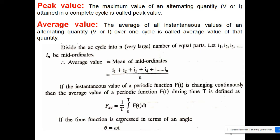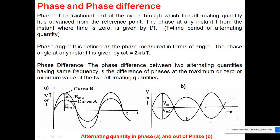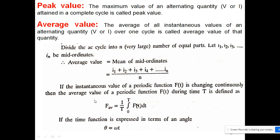Using the mid-ordinate method, the AC cycle is divided into N parts with instantaneous current values I1, I2, I3 ... up to IN. The average value is the mean of all these mid-ordinate values. Since the instantaneous value of a periodic function is continuously changing, we take the mean of all these continuously changing values.